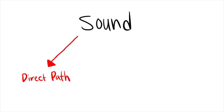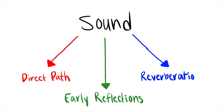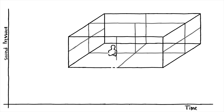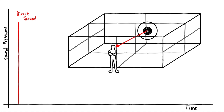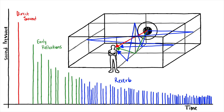Sound is divided into three categories: direct path, early reflections, and reverberation. Direct path is the quickest path to the listener and helps determine where a sound is coming from, and it also provides a very clear sound. Early reflection occurs right after the direct path and gives us a sense of the environment's surface. Reverberation helps us identify the size of the space.